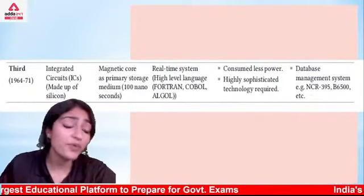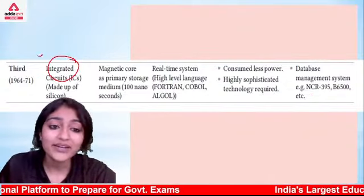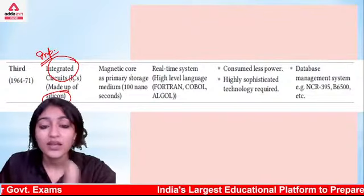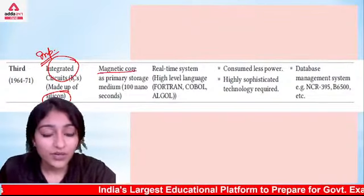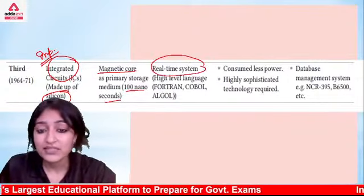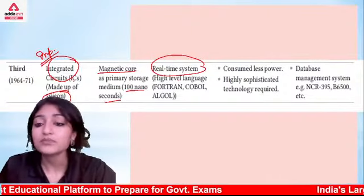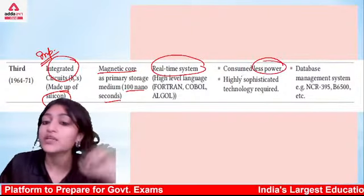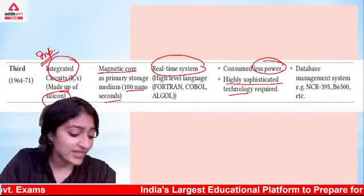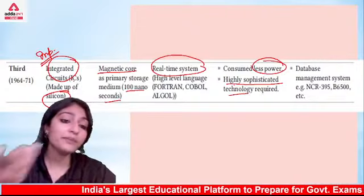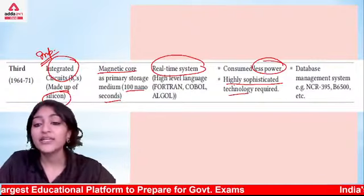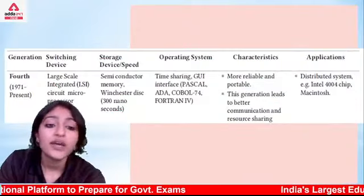Third generation (1963 onwards): used integrated circuits (IC) made of silicon; technology was magnetic core; speed was 100 nanoseconds; operating system was real-time; consumed less power; used highly sophisticated technology. Examples include database management systems.